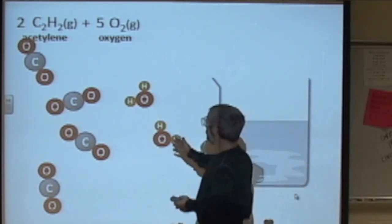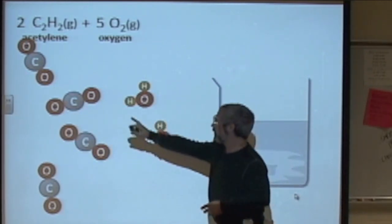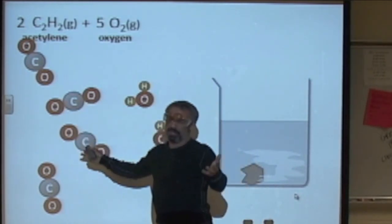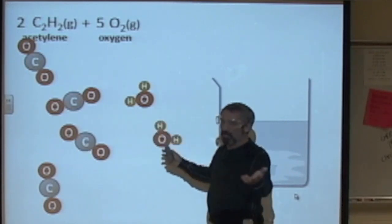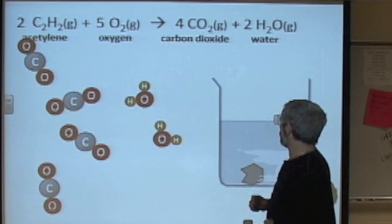And form these four and two, six total molecules: four carbon dioxide, we know that, and two water molecules. Those are usually the products of combustion. And there's what that looks like. So that's the reaction taking place when I lit the acetylene gas.